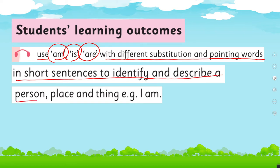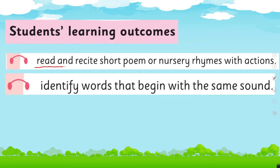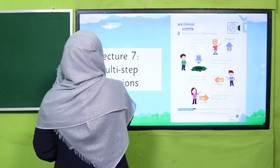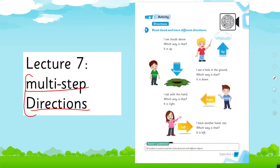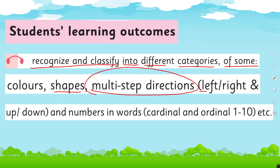For example: 'I am...' In Lecture 6, we'll read and comprehend a beautiful poem and cover the SLO to read and recite short poems or nursery rhymes with actions, and identify words that begin with the same sound. In Lecture 7, we'll learn about multi-step directions and cover the SLO to recognize and classify colors, shapes, and multi-step directions like left, right, up, and down.